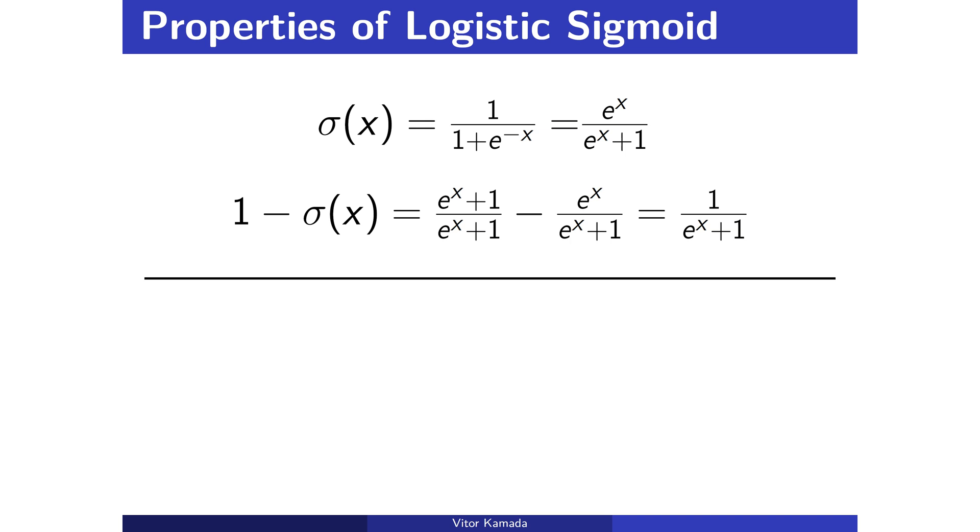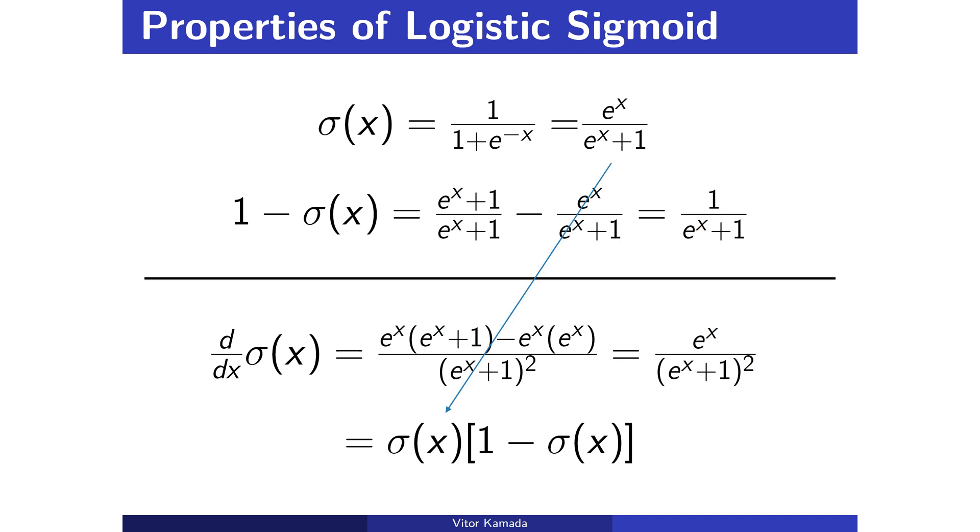But first, let's take the derivative of the logistic function. If you apply the quotient rule, you're going to get e to the x divided by e to the x plus 1 squared. Now we can rewrite the derivative as a product of the previous two expressions. See that the derivative is the logistic function times the complement. That is, the probability of success times the probability of failure.